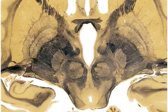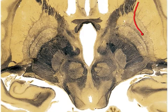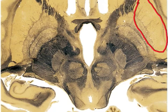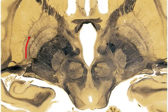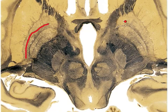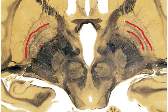We have several basal ganglia structures. We have the putamen right here, and another one right here. And then we have the globus pallidus external right here, and here's the external. And then we have the internal right here.